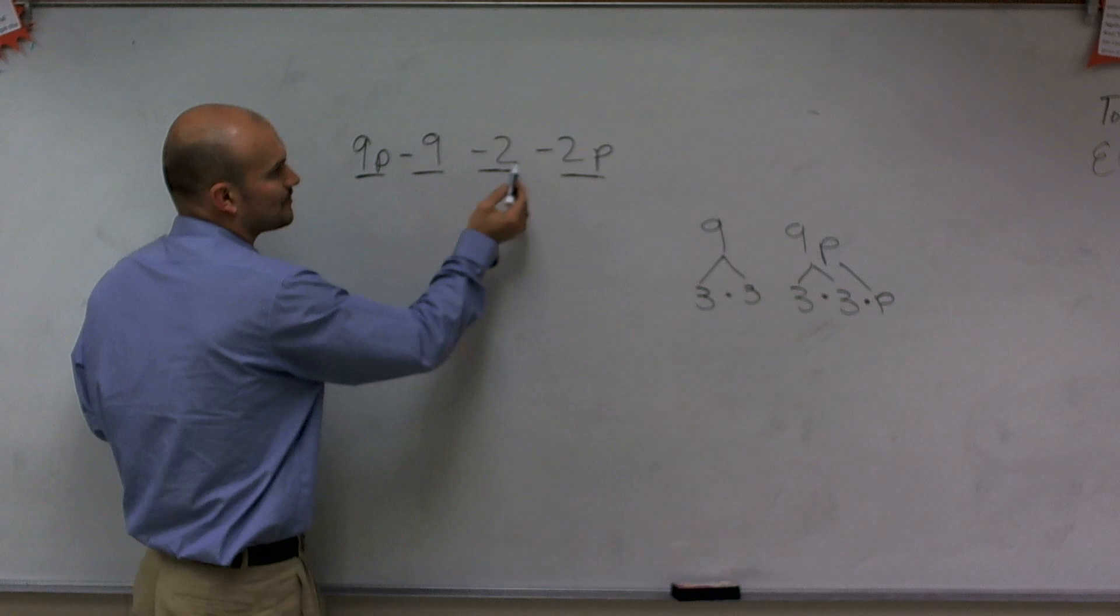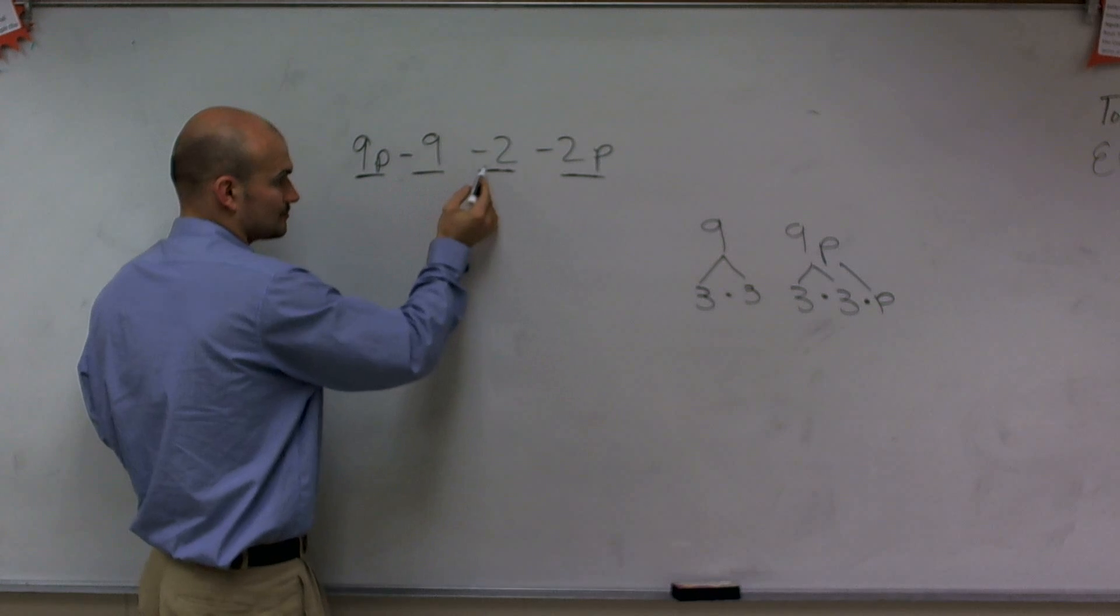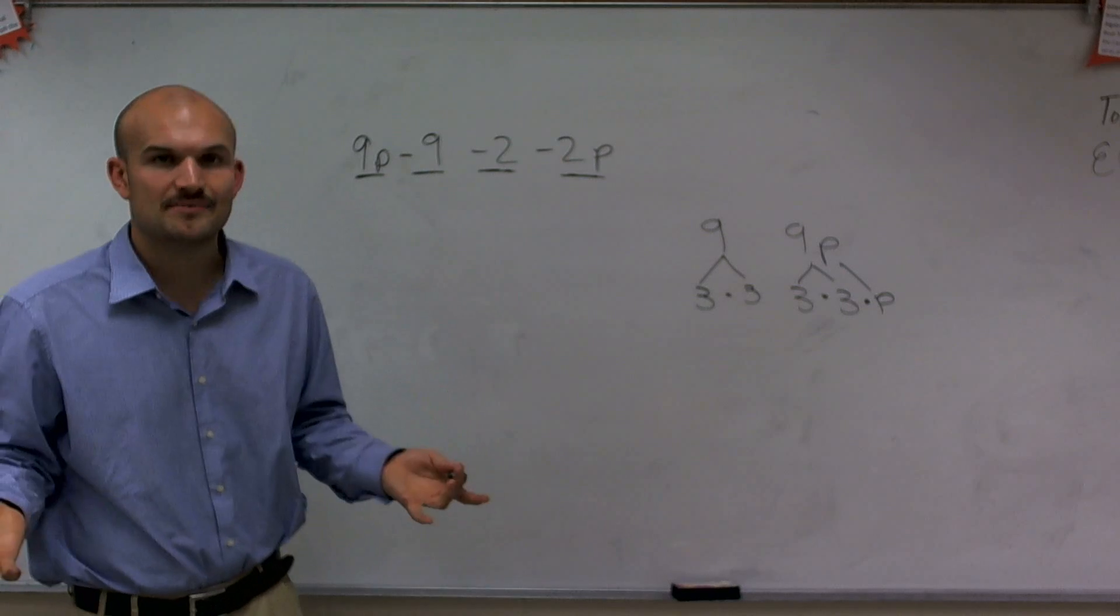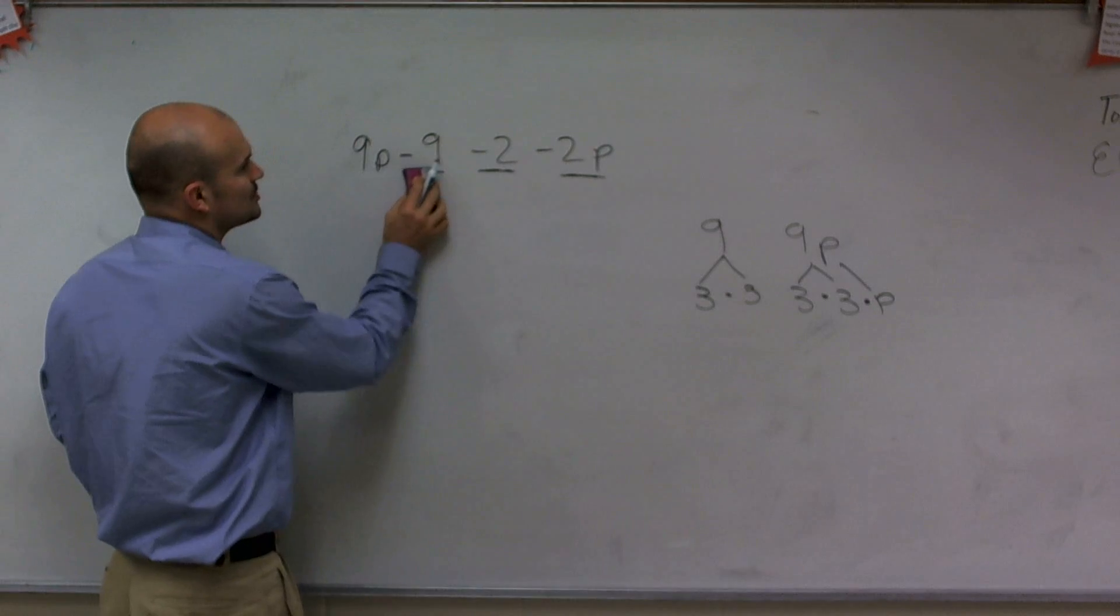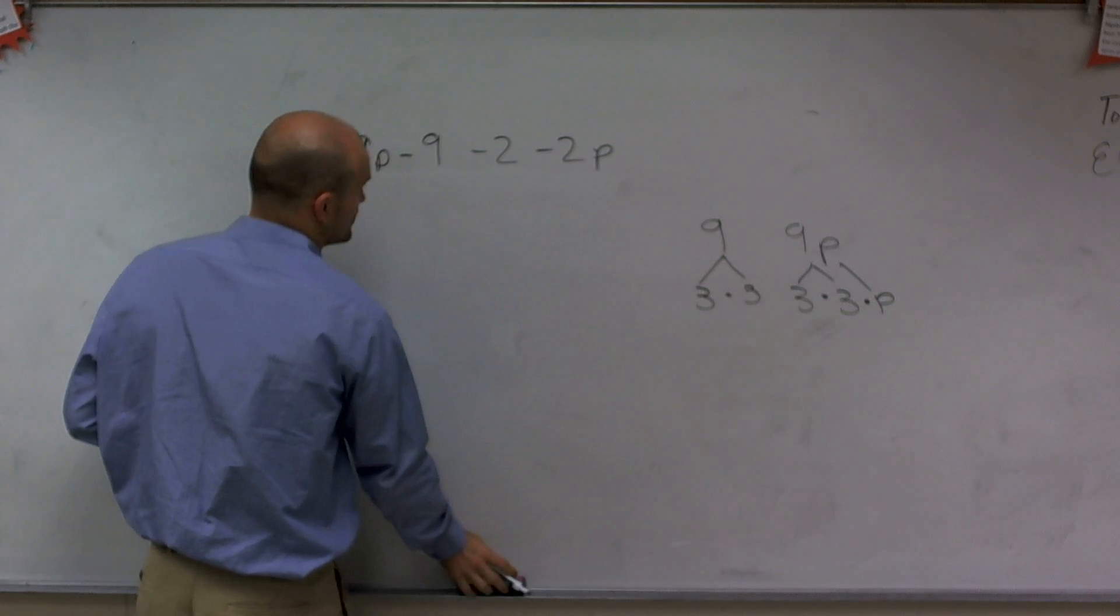You can't say 9p minus 2 would be 7p. Since they're not like terms, we can't combine them. We can only combine terms that are similar.